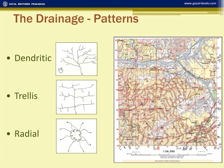In the radial pattern, the tributaries come out from a hill in a circular manner. Hence, this is called a radial pattern. You can see the example in grid square 3985.